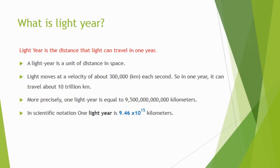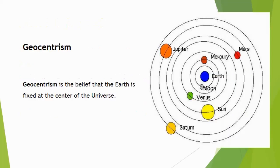In scientific notation, one light year is 9.46 times 10 raised to power 15 kilometers. Now we come to the solar system. In this lecture I will tell you about solar system and how it works, but before going further I will tell you about the concept that used to be in olden times regarding center of solar system.